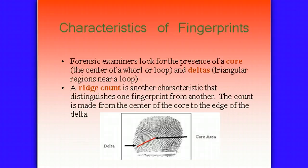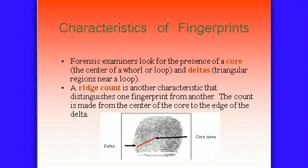Forensic examiners are also going to look for the presence of the core — it's the center of a whorl or a loop. The deltas are usually near the loop, but the core itself enables them to perform another type of quantitative analysis called a ridge count. The ridge count is another characteristic that distinguishes one fingerprint from another. Basically, you start at the center of the core and you count the number of ridge points until you reach the delta, and that's going to be fairly unique from person to person.